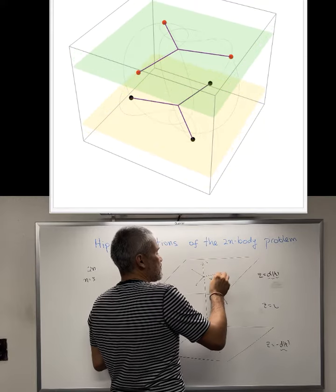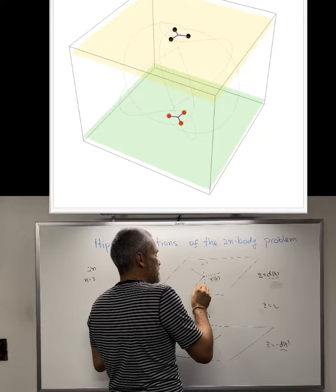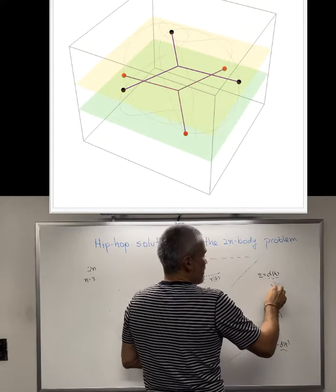If I pick this body, the distance from this body to the z-axis is the same as the distance from that body to the z-axis, and so on. Then we have a second function.